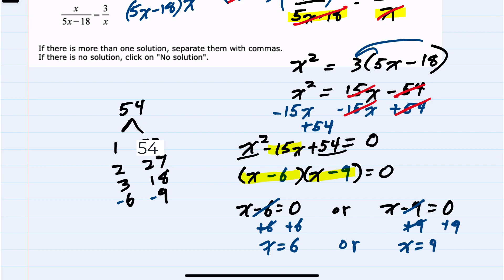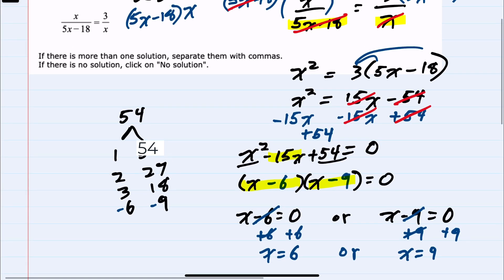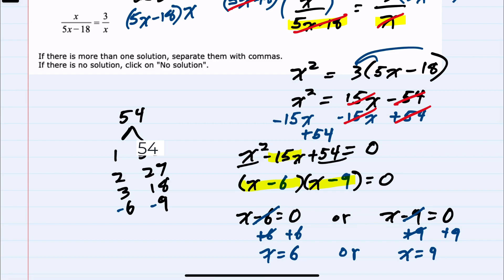We have two potential solutions. We always want to look back at our denominators to see if either of these potential solutions gives us a 0 denominator. And for both of these, if I plug in 6 or if I plug in 9, I do not get a 0 denominator. So these are both valid solutions. Separating with a comma, we have 6 and 9 as our solution set.